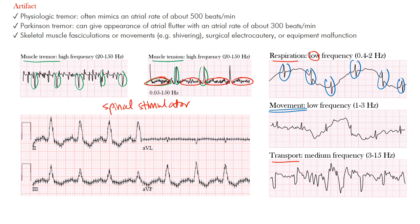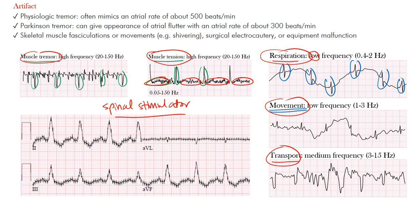To recap: artifact is something not normal to the intrinsic electrical conduction system of the heart — it's something outside of that causing interference. We talked about physiologic tremor, which can be very fast; Parkinsonian tremor due to the resting tremor; skeletal muscle fasciculations or movements; shivering; surgical electrocautery; and equipment malfunction. We went through examples including muscle tremor, muscle tension, respiration, movement, transport, and the spinal stimulator.